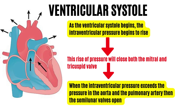This period is known as the isovolumic or isometric contraction phase. When the intraventricular pressure exceeds the pressure in the aorta and pulmonary artery, the semilunar valves open and ventricular ejection begins. Ejection is rapid at first but slows during the later part of ventricular systole. The amount of blood ejected per ventricle per beat — the stroke volume — is about 70 milliliters, while about 50 milliliters remain in each ventricle as the end systolic volume.